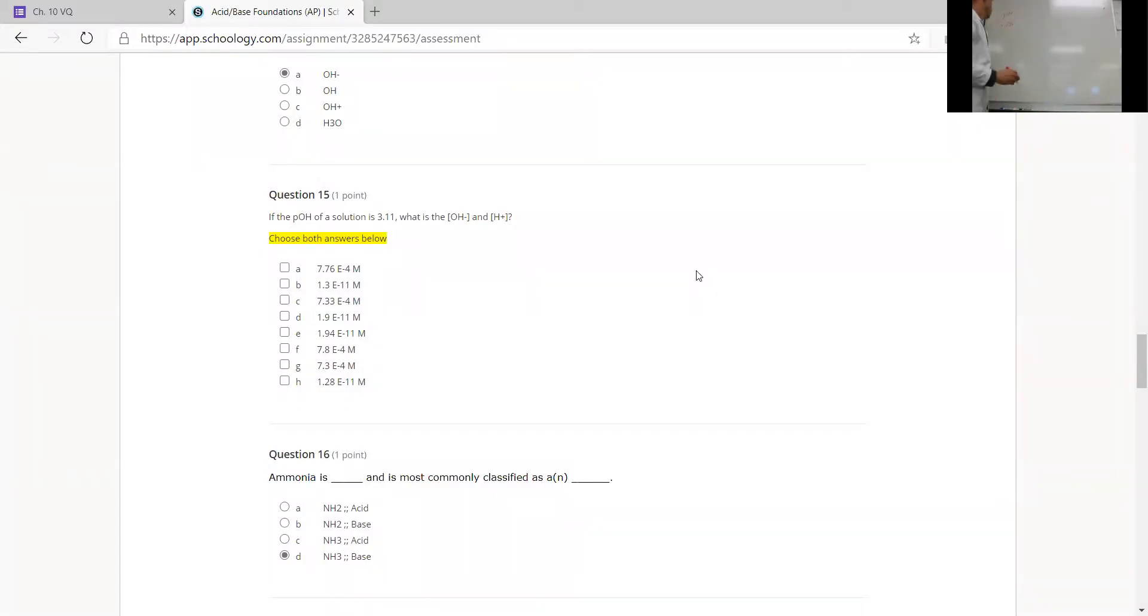All right, so if we take a look at all of these values, we just have to understand their mathematical connection. On the problem that we're looking at, all it gives us is a POH of 3.11.